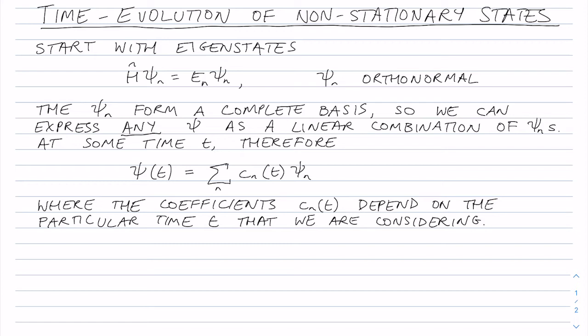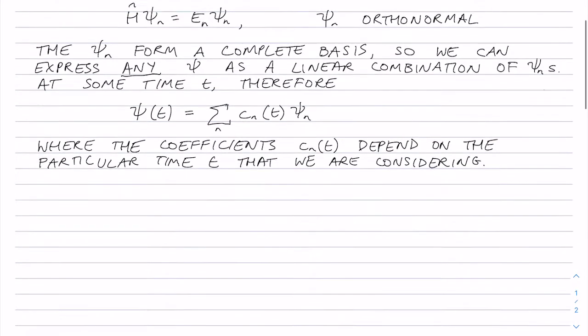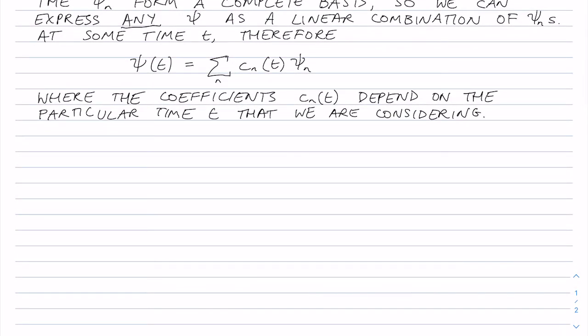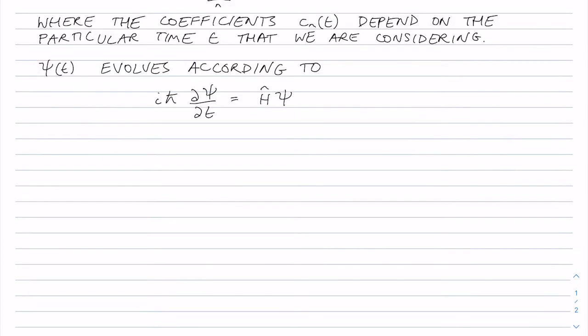And how does the wave function psi evolve? Well, we know this from the time-dependent Schrodinger equation. The evolution of the wave function psi is determined by the Hamiltonian H. And remember, for the time being, H is not time-dependent. We'll deal with time-dependent Hamiltonians in a later video. Now we're going to expand the wave function over the psi n, the eigenfunctions.